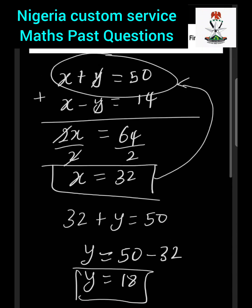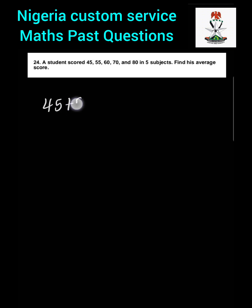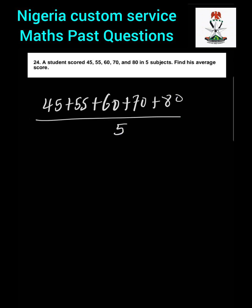Question 24: A student scores 45, 55, 60, 70, and 80 in five subjects. Find his average score. When you hear average, it is the same as mean. We add all the scores and divide by the total number of subjects, which is 5. So we calculate 45 plus 55 plus 60 plus 70 plus 80, all divided by 5.